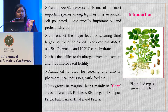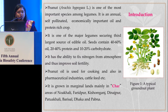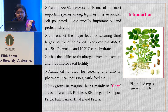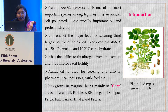As we all know, peanut is one of the most important species among legumes, securing the third largest source of edible oil. The seed contains 40 to 60% oil, 20 to 40% protein, and 10 to 20% carbohydrate. It has the ability to fix nitrogen from the atmosphere, thus improving soil fertility as well. Usually in Bangladesh, it is grown in marginal land, mainly known as the char areas.